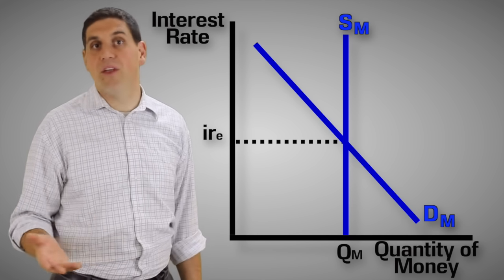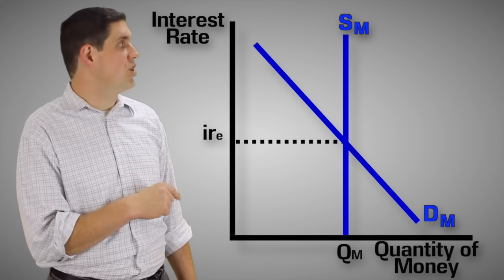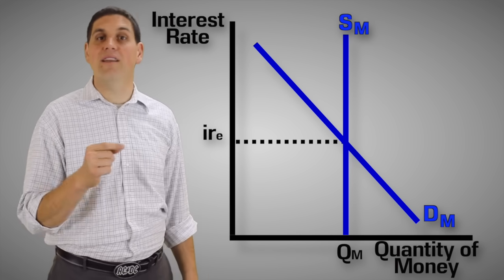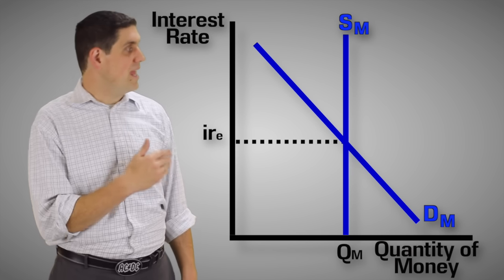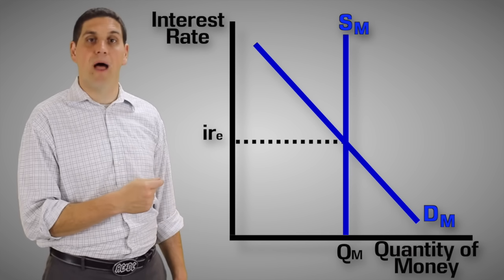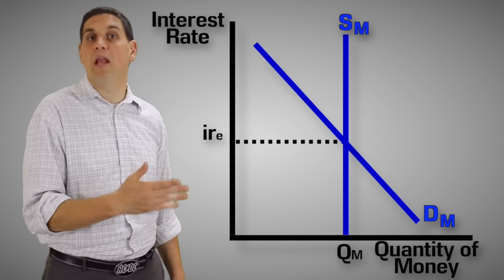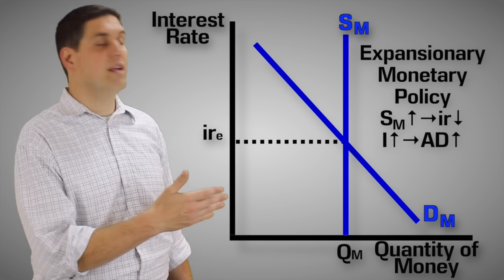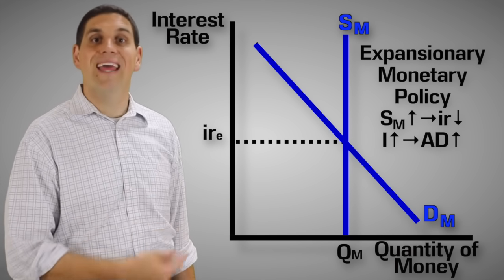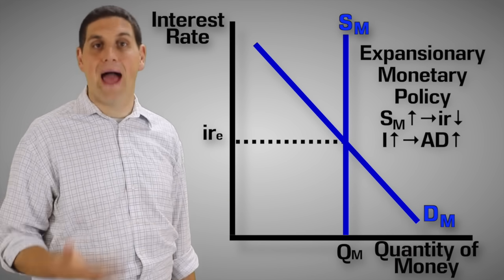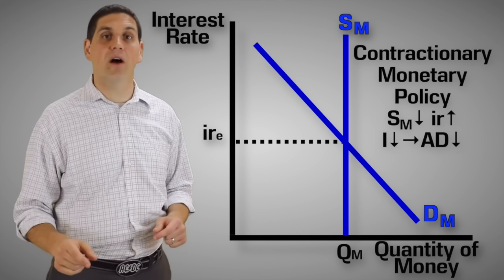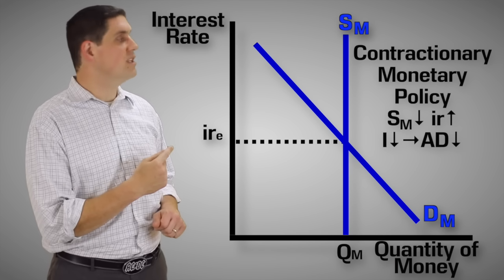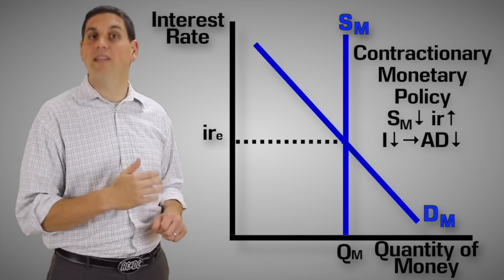Unlike aggregate demand or the Phillips curve, this graph does not show a recession, inflation, or full employment. Instead, this graph is used to show the idea of monetary policy — when the Fed increases or decreases the money supply to affect the interest rate to speed up or slow down the economy. Expansionary monetary policy is when the Fed increases the money supply; this will decrease interest rates, increase investment, and increase aggregate demand. Contractionary monetary policy is designed to fight inflation — this is when the Fed decreases the money supply, which would increase interest rates, decrease investment, and decrease aggregate demand.